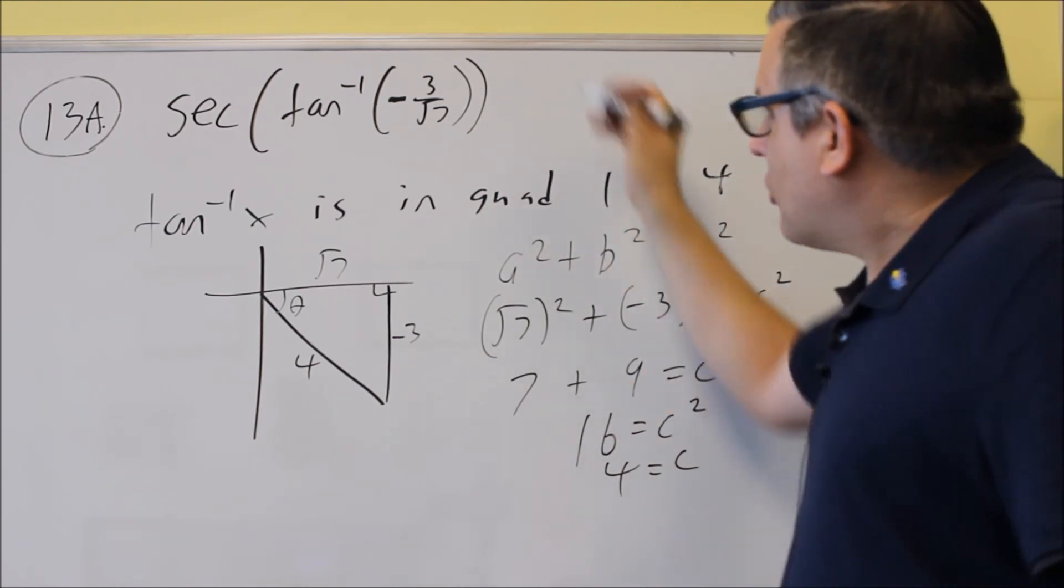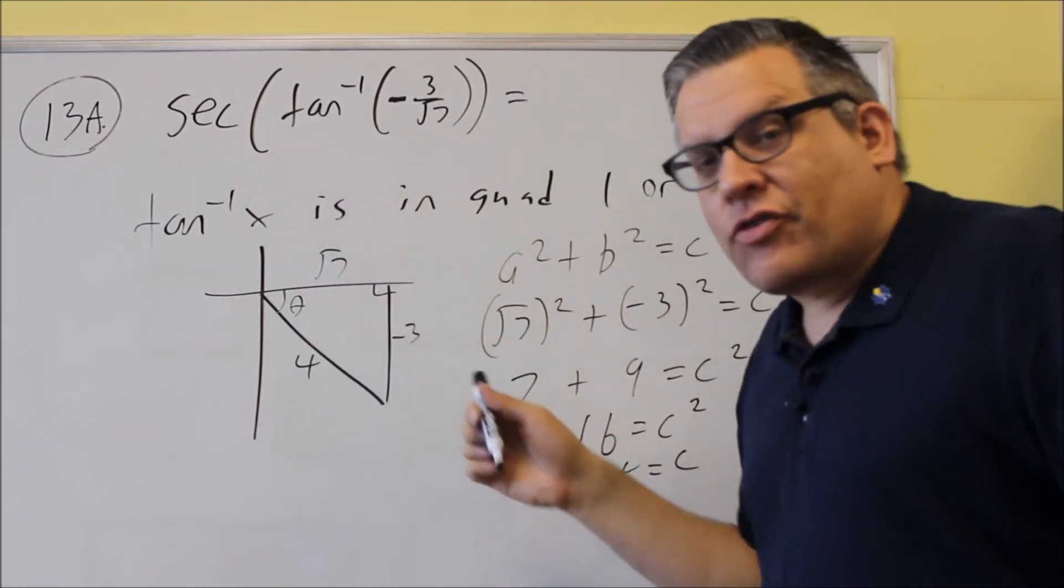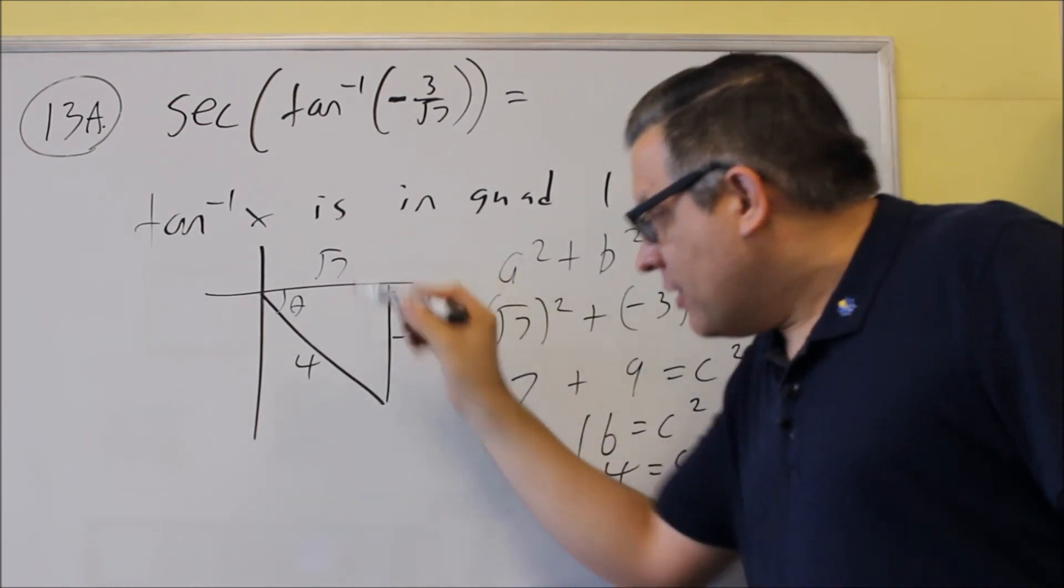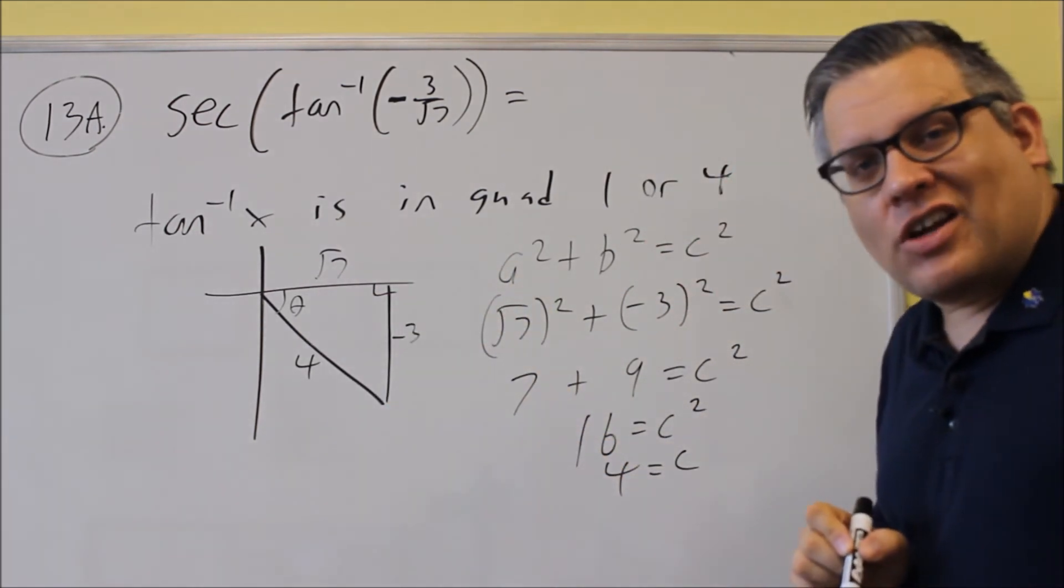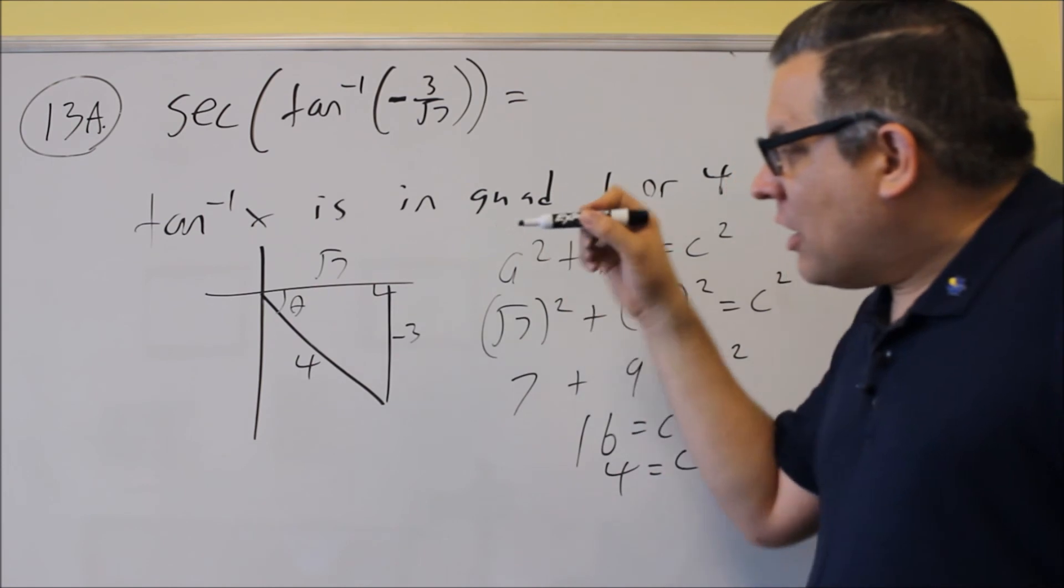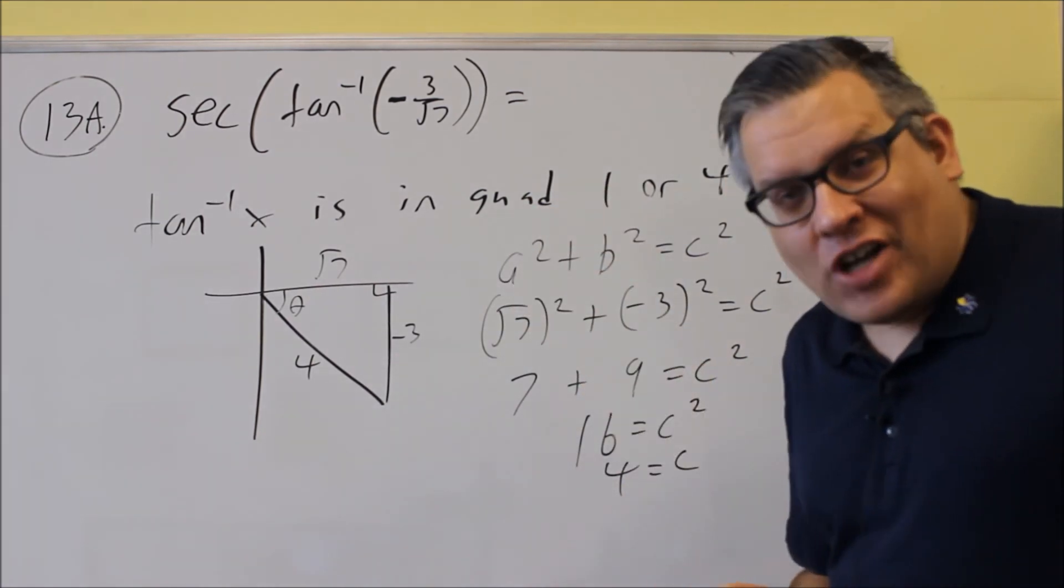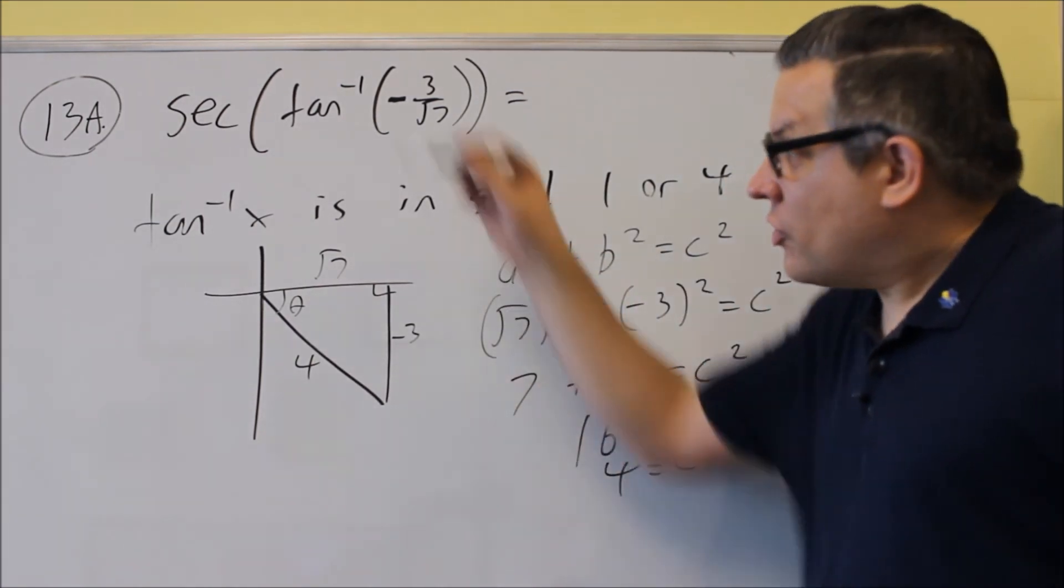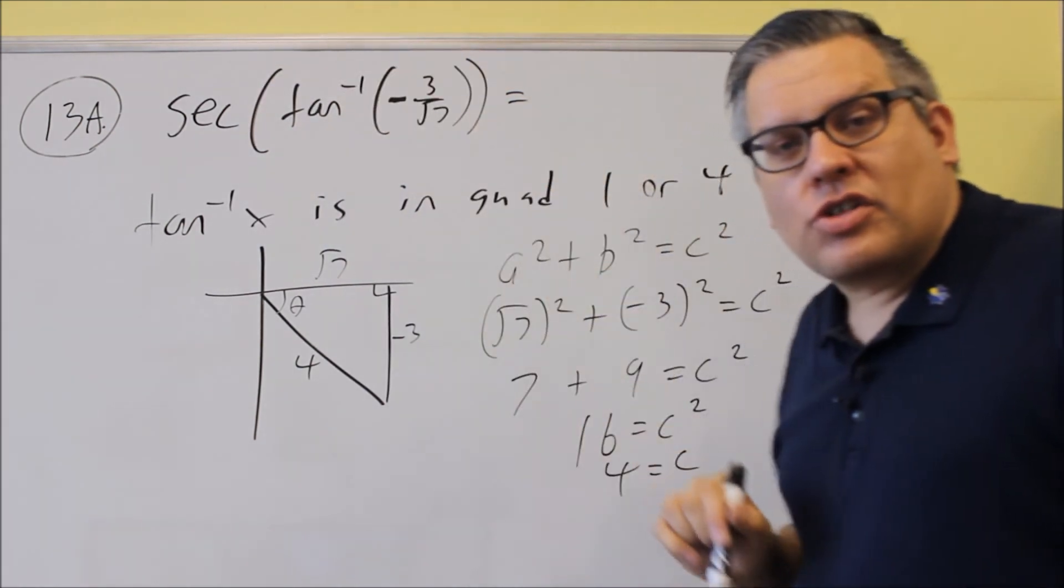So the answer to this problem, we're going to read that off. Use the definition for secant and use that on here. The definition for secant is hypotenuse over adjacent. So you use the outside one to get the answer.